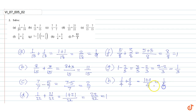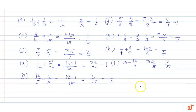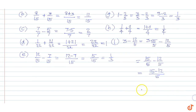Part i: 3 minus 12/5. This is equal to 3 multiplied by 5 over 5, minus 12/5. We make the denominators equal, so we write 15/5 minus 12/5, which equals 15 minus 12 divided by 5, which equals 3/5. These are our answers.